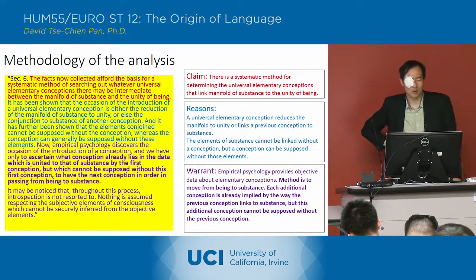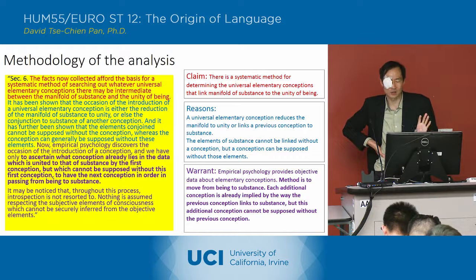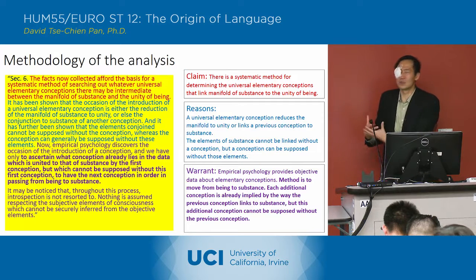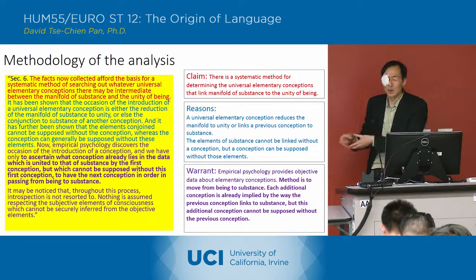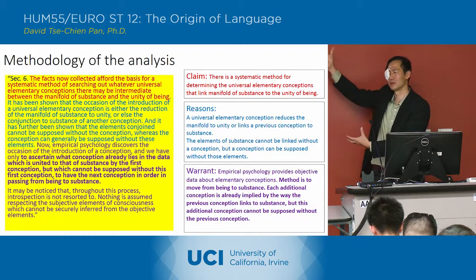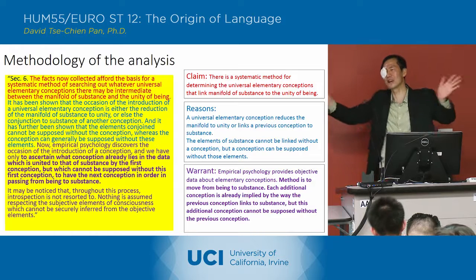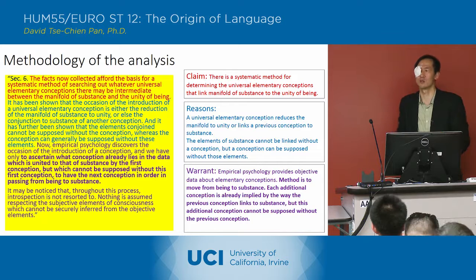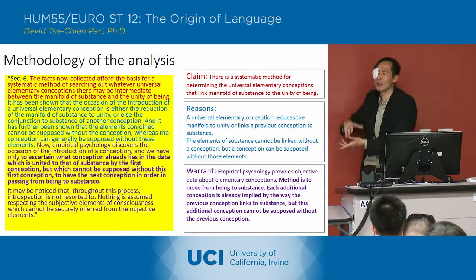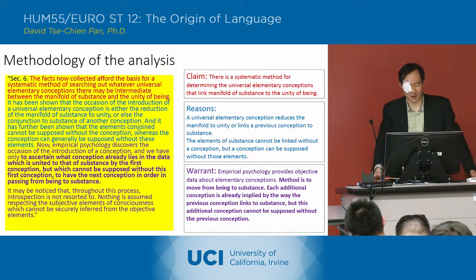It has been further shown that the elements conjoined cannot be supposed without the conception, whereas the conception can generally be supposed without these elements — and this is the fact of precision. Substance up there needs some conception to be linked together, to create some kind of unity. But you can have a conception without those elements. So he's kind of reversing what you would normally think: first you've got all these things out in reality, and then from there you get to some general conception. He says no, it's the other way around — the elements of substance can't be linked without a conception. You have to start with the conception, and then you can get back to the things out there.